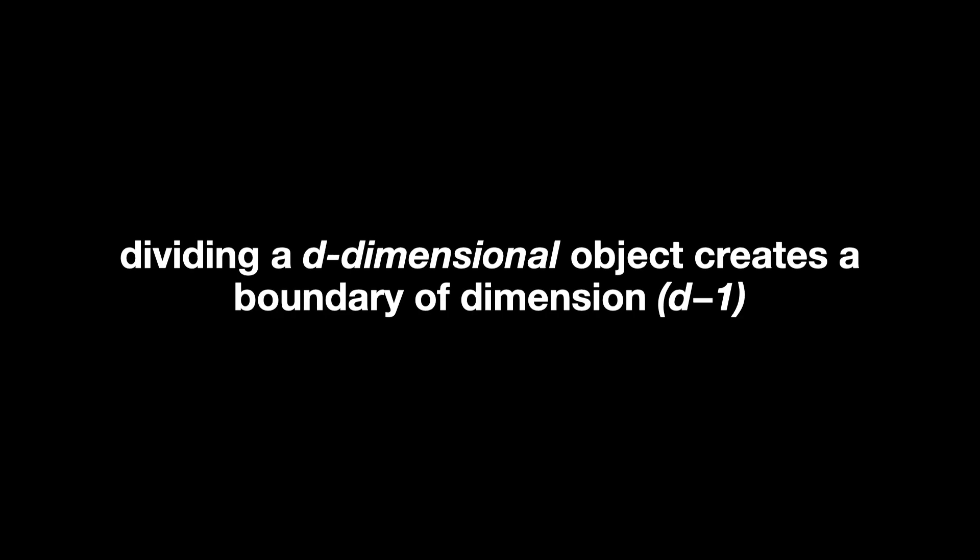This creates the principle that dividing a D-dimensional object creates a boundary of dimension D-1. If you're enjoying this video, don't forget to like it and to subscribe to the channel. So let's say D is the number of dimensions of the plane, the sheet of paper, which is 2. The resulting curve has dimension D, which in this case 2, minus 1. So the curve has dimension D-1, or 1.